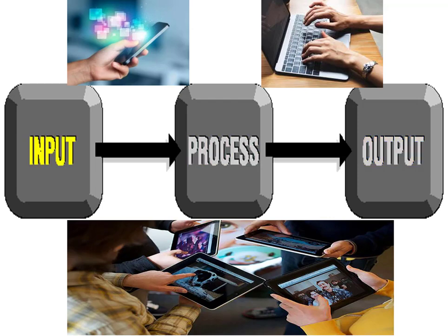A computer is an electronic device operating under the control of basic instructions that have been stored in its own memory. A computer can accept data — known as input — process that data according to specified rules based on the programs it has, and then produce some type of output to the user. A computer can also store that information for future use. Computers contain many electronic and mechanical components known as hardware. A user is generally anyone who interacts with the computer or utilizes the information generated through this input-process-output cycle.